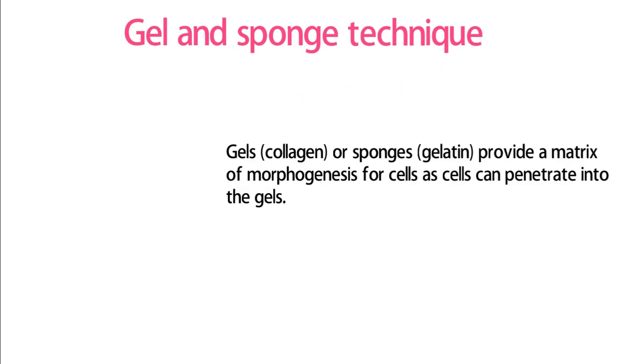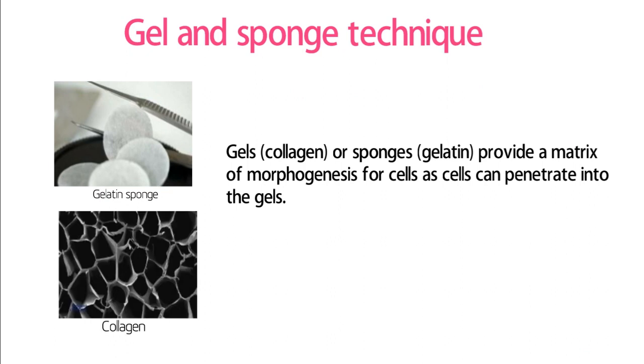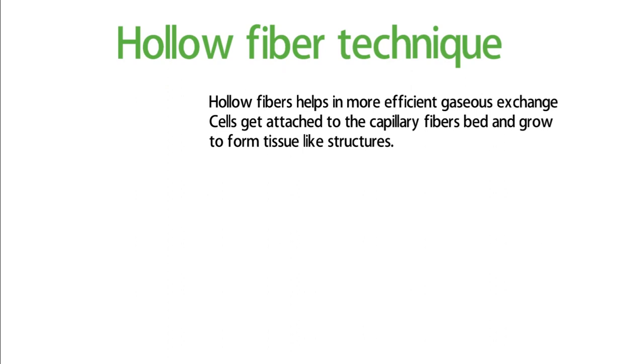In the gel and sponge technique, the cells in the culture can penetrate gels or sponges which provide a matrix for morphogenesis of primitive cells. This approach has been used for the development of mammary epithelium and some tubular and granular structures.